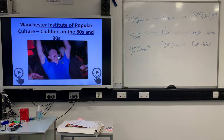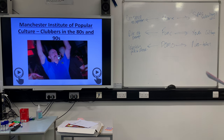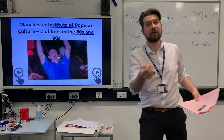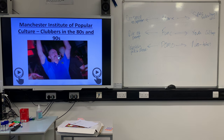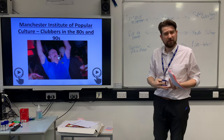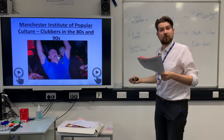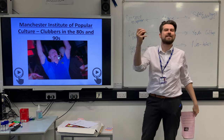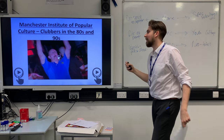Instead of looking for subcultures we need to look for neo-tribes. We're going to look at the Manchester Institute of Popular Culture — last time we looked at the CCCS from Birmingham; now it's the Manchester Institute, which investigates ravers and clubbers in the 1990s. According to Sarah Thornton, these clubbers come from anywhere in the geography of the area — it doesn't matter if they're working class or middle class, black or white, male or female. They come together just for that event, not necessarily to form long-lasting relationships, just turning up for that one rave experience.